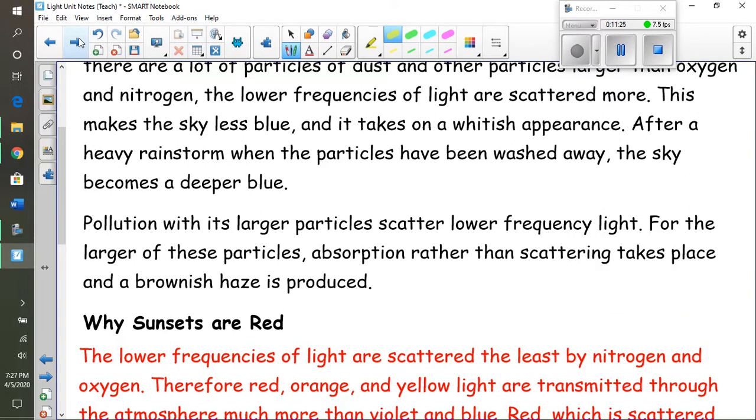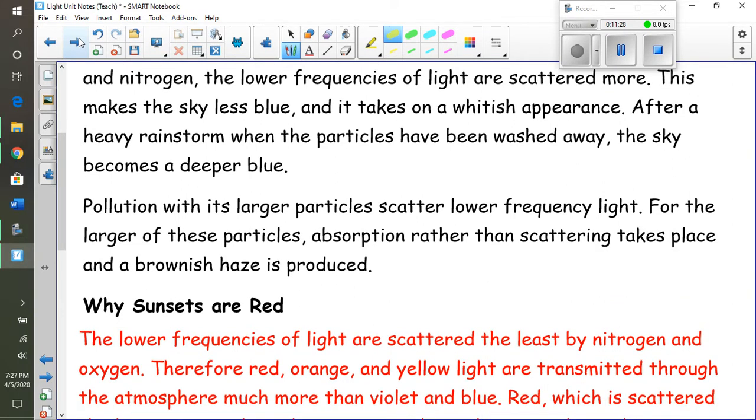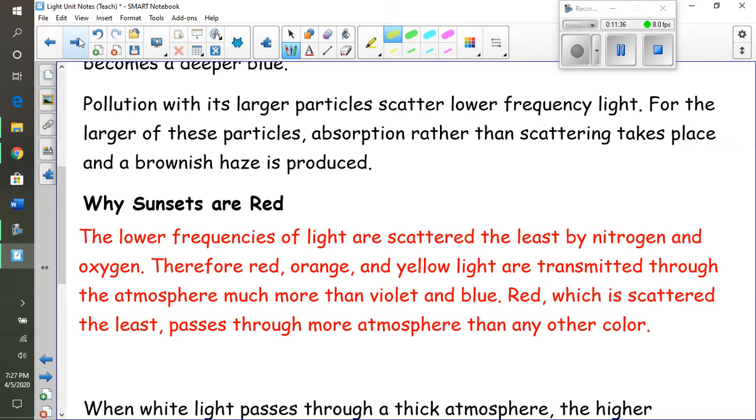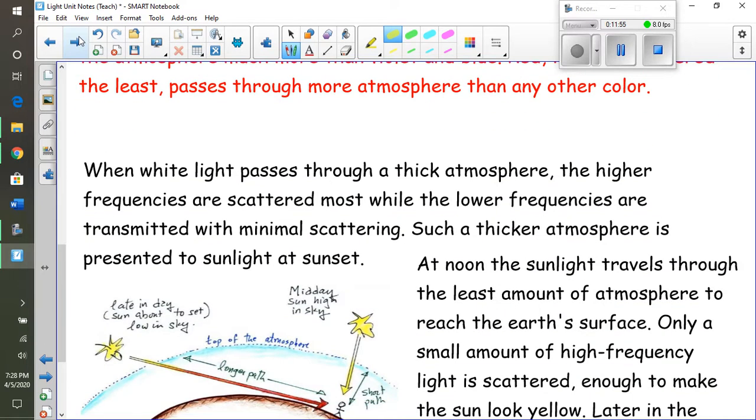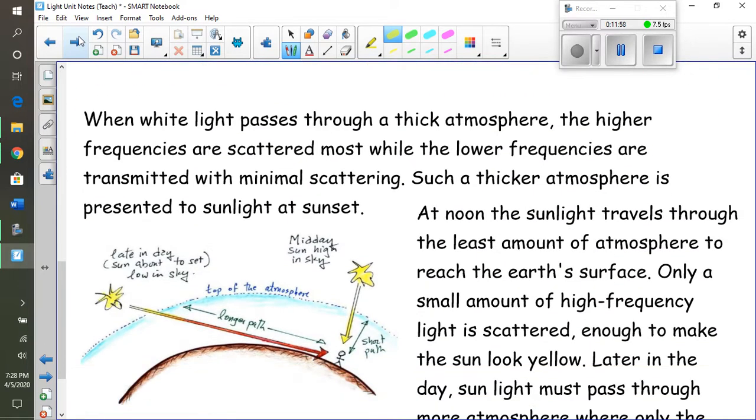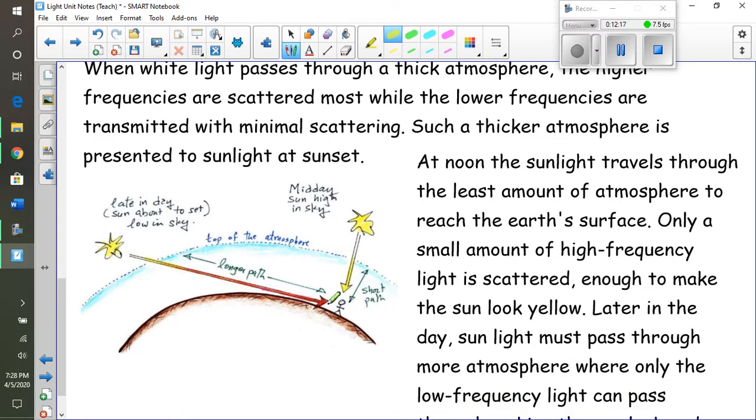Pollution with its larger particles scatters low-frequency light, and for the larger of these particles, absorption rather than scattering takes place and you get a brownish haze. During sunsets, the lower frequencies of light are scattered less by nitrogen and oxygen, so red, orange, and yellow light are transmitted through our atmosphere much more easily than violets and blues. Red, which is scattered the least, passes right through the atmosphere more than any other color. So when white light from our sun passes through the thick part of our atmosphere like at dawn or dusk, the lower frequencies can get through - the red light goes right through - but the higher frequencies can't get through. They're scattered. So that's why the sun looks redder when it first rises and when it sets.